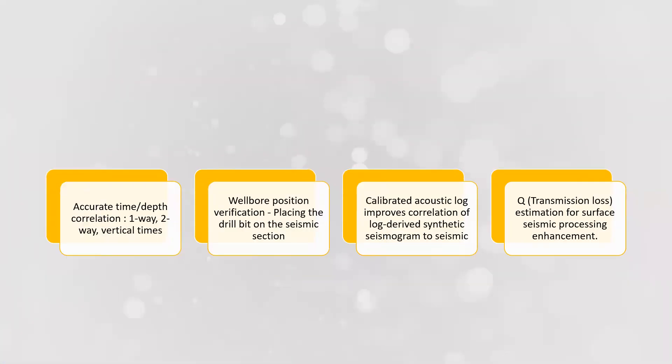Other applications of CheckShot survey include accurate time-depth correlation, one-way or two-way vertical times. It is used for wellbore position verification, like placing the drill bit on the seismic section. It can be used to calibrate the acoustic log and improve correlation of log-derived synthetics to surface seismic data. Lastly, it helps to find transmission loss or Q estimation for surface seismic processing enhancement. Transmission loss, maybe due to friction, scattering, or fluid motion, is very important for seismic data resolution, and modern studies are considering it very seriously in numerical wave modeling.